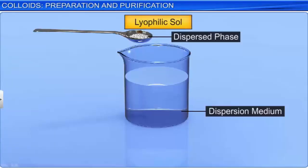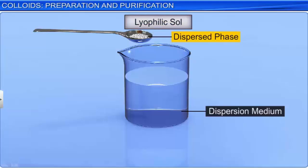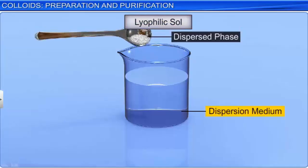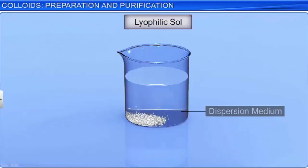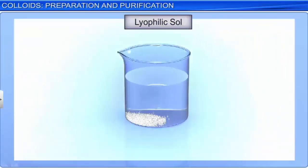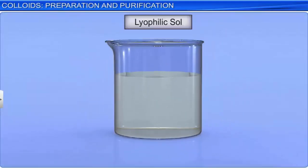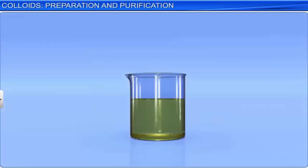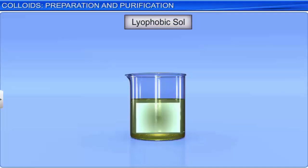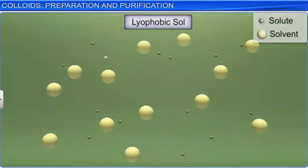The stearate ions of soap molecules help in making a stable emulsion of oil with water which is later washed away with the excess of water. A sheath of negative charge is formed around the globules which prevents them from coming together and forming aggregates. We can also say that soap acts as an emulsifier and helps an emulsion stabilize.